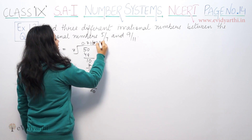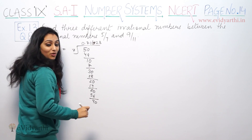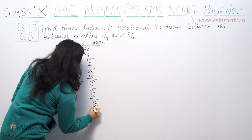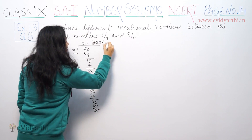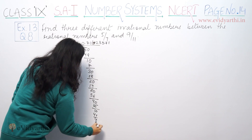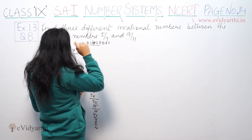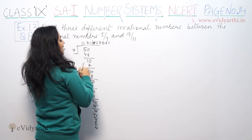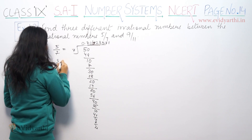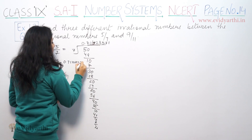Continuing the division: 7 eights are 56, 7 fives are 35, 7 sevens are 49. The decimal expansion of 5 by 7 is 0.714285 7, and 714285 is the repeating block. So 5 by 7 equals 0.714285 recurring.